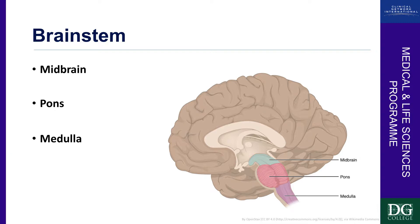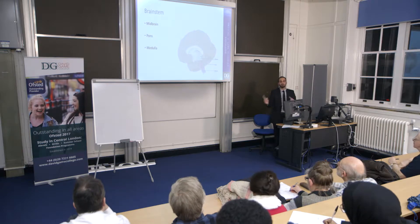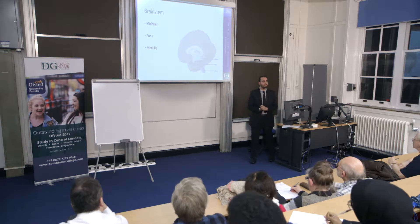This here is the cingulate gyrus, and then you've got these subcortical structures here called the corpus callosum. The corpus callosum connects the right hemisphere and the left hemisphere, because the brain itself has actually got a longitudinal fissure which divides the two sides. That connection — the corpus callosum — is the key connection between the left side of the brain and the right side of the brain.